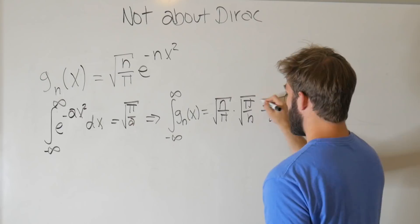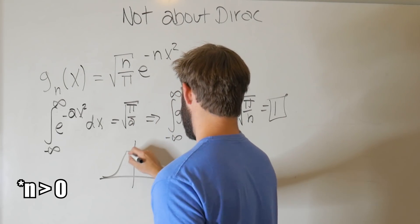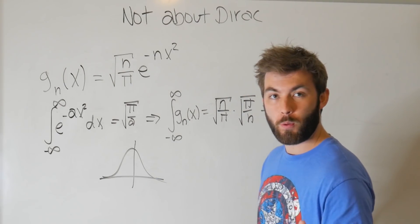One, for any n that you plug in here, the area under this Gaussian distribution is always going to be one. That's pretty crazy, but just wait, it gets crazier.